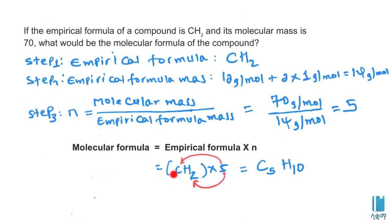The empirical formula is CH2, multiply by n which is 5, giving C5H10 as the molecular formula. Once you calculate the empirical formula and find n, you can determine the molecular formula. Thank you.